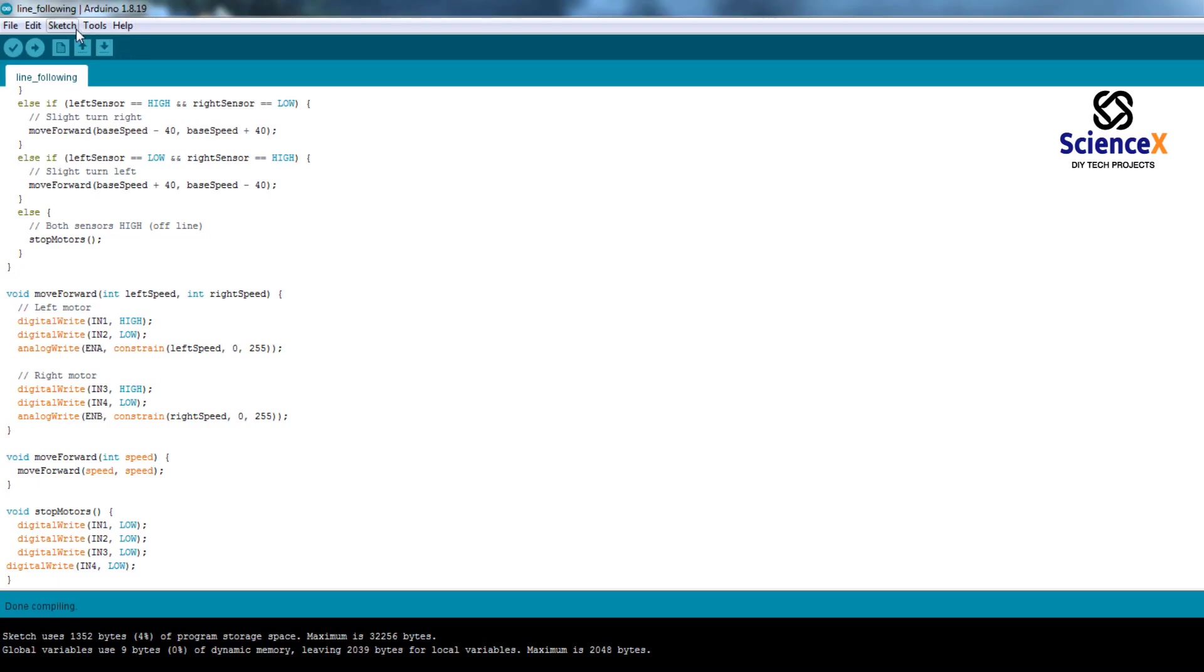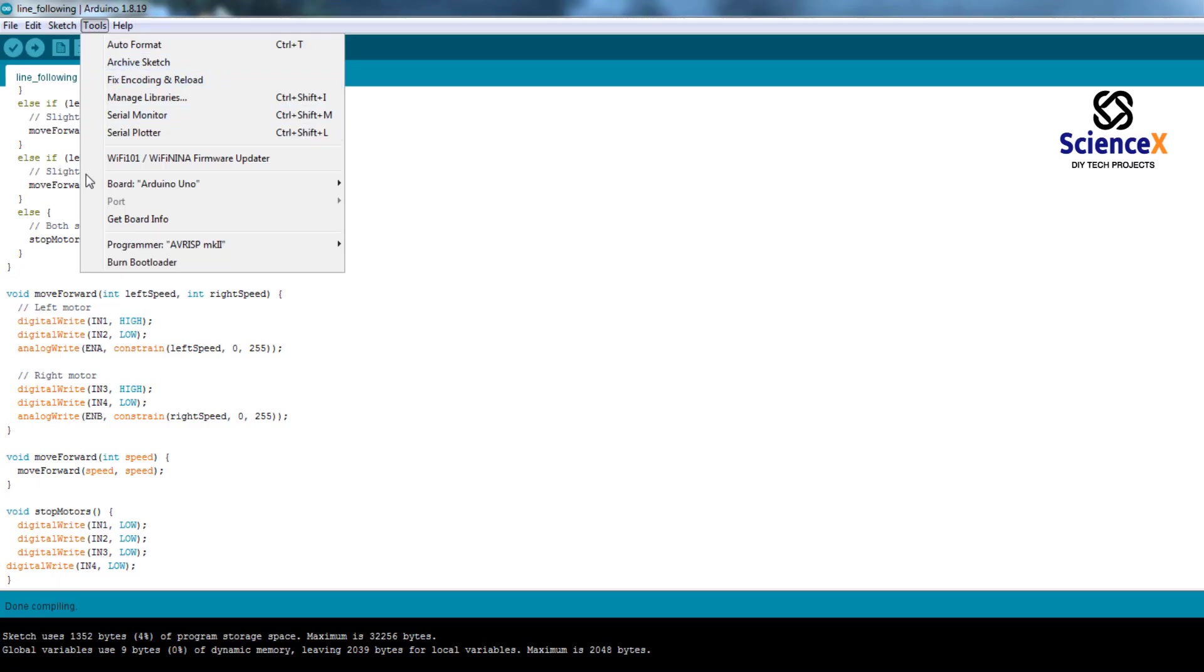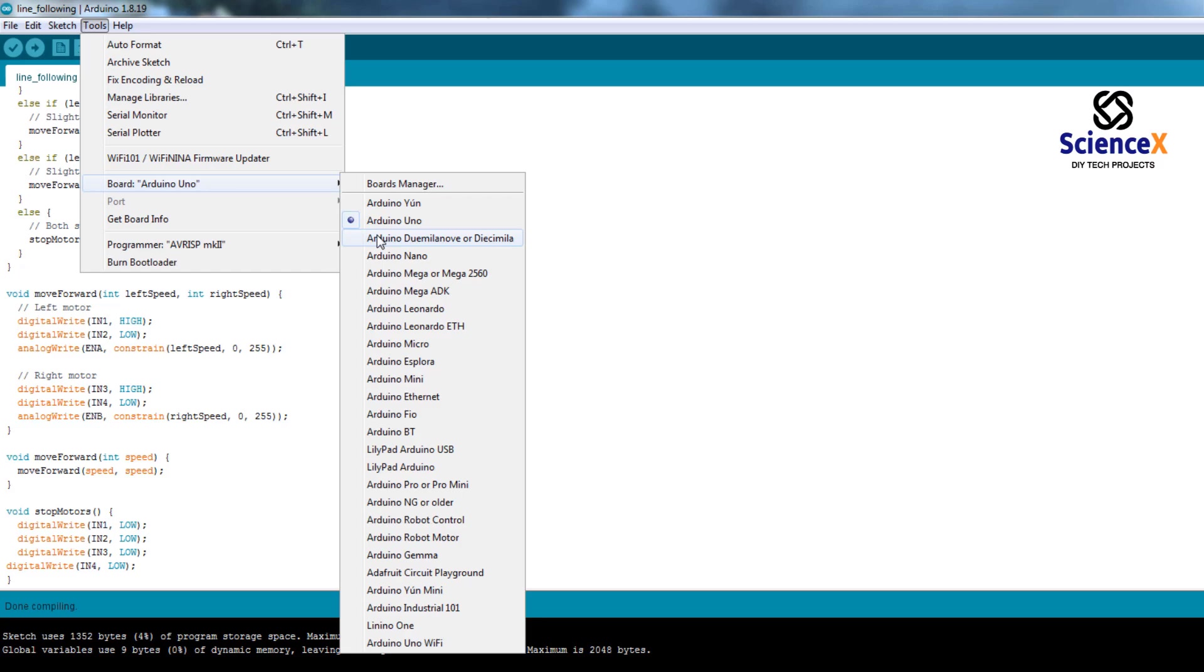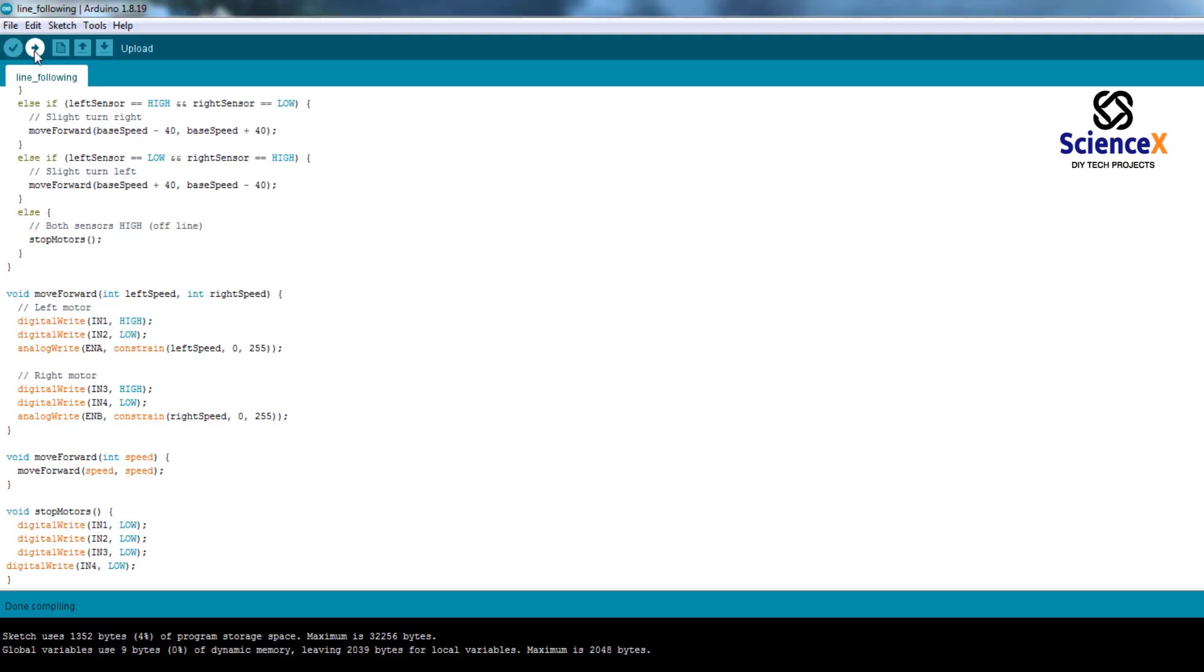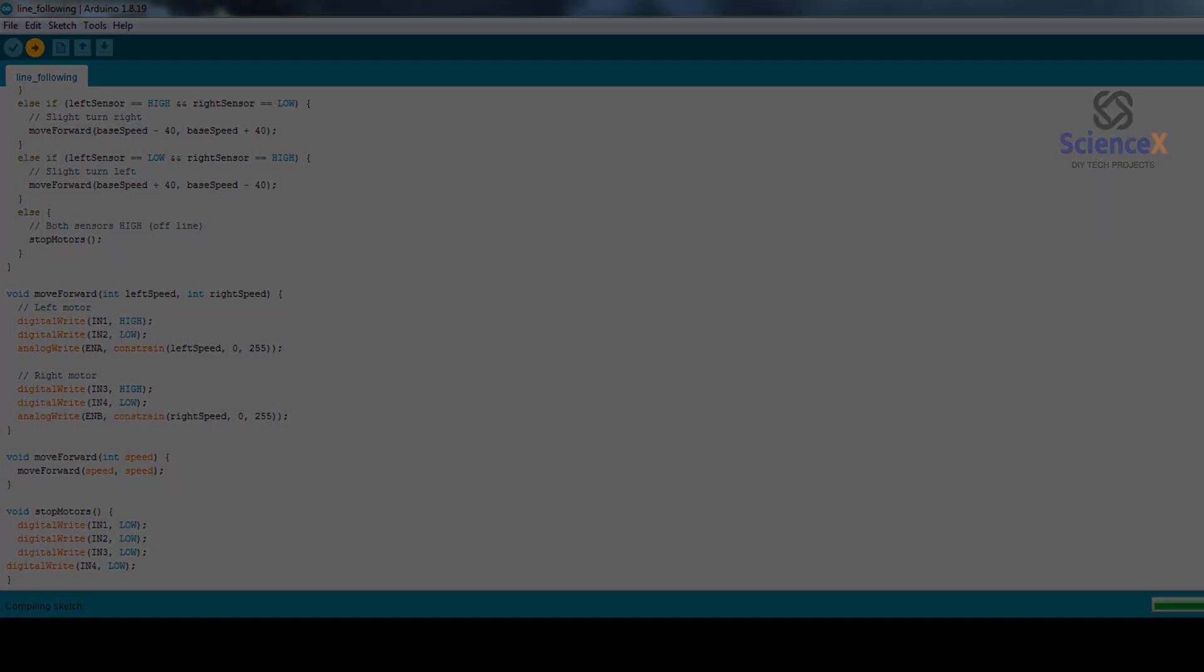After making all these things, we have to check the Arduino board selected or not and then port. If you connected the USB cable, it will show COM3, COM4 like that. After making sure both things, then we have to verify the code. Then we have to upload to the board. This is all about coding.